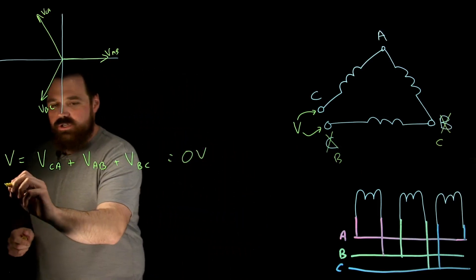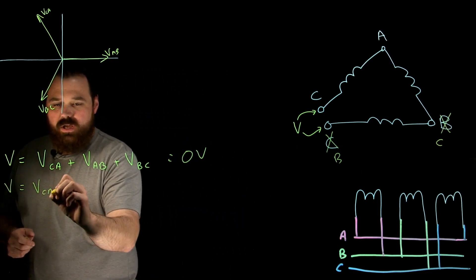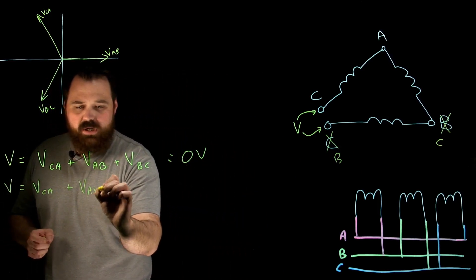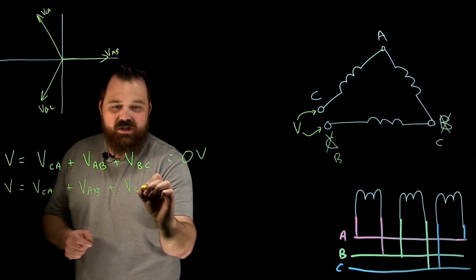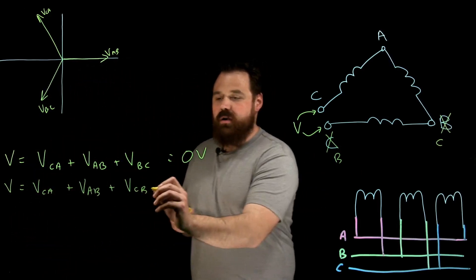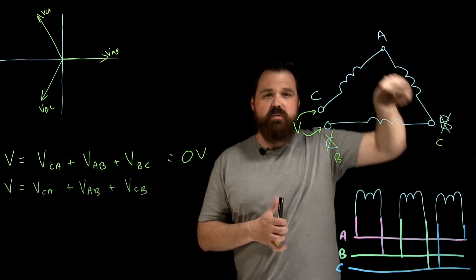Well, we're gonna do the same thing. We're gonna go voltage equals V C to A, plus V A to B, plus V C to B to complete that closed loop through my delta.